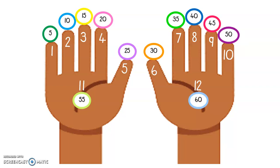So if you put your pinky up, it's 1. 1 times 5 is 5. If you count in 5s: 5, 10 — so 2 times 5 is 10. 3 fingers is 15. 4 fingers is 20. 5 fingers is 25. 6 fingers is 30. 7 fingers is 35. 8 fingers is 40. 9 fingers is 45. 10 fingers is 50. Then you go to your left palm — 11 is 55, and 12 is 60. How easy is that? So if you ever get stuck, use your fingers to count in 5s.